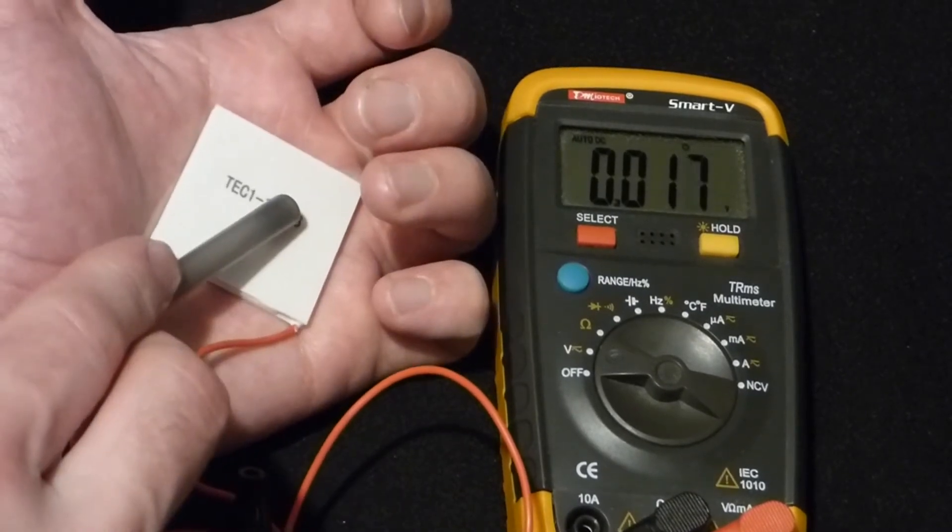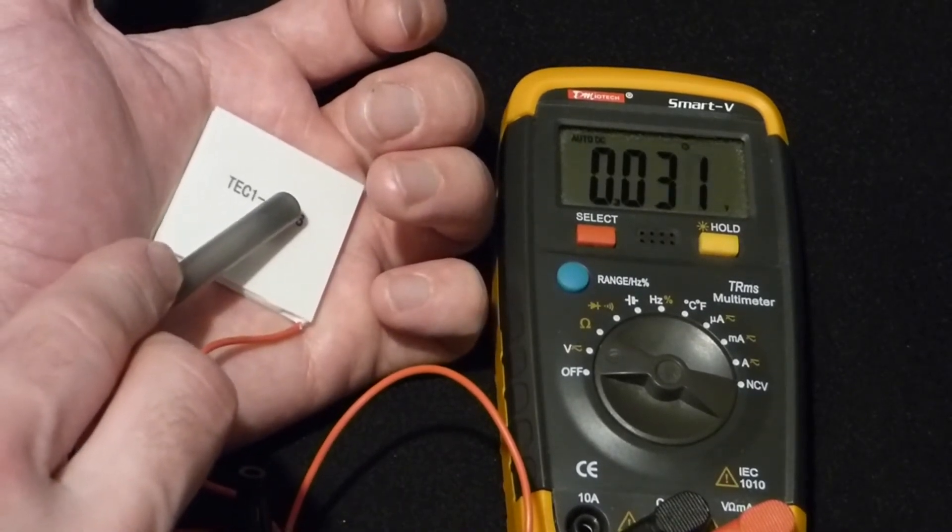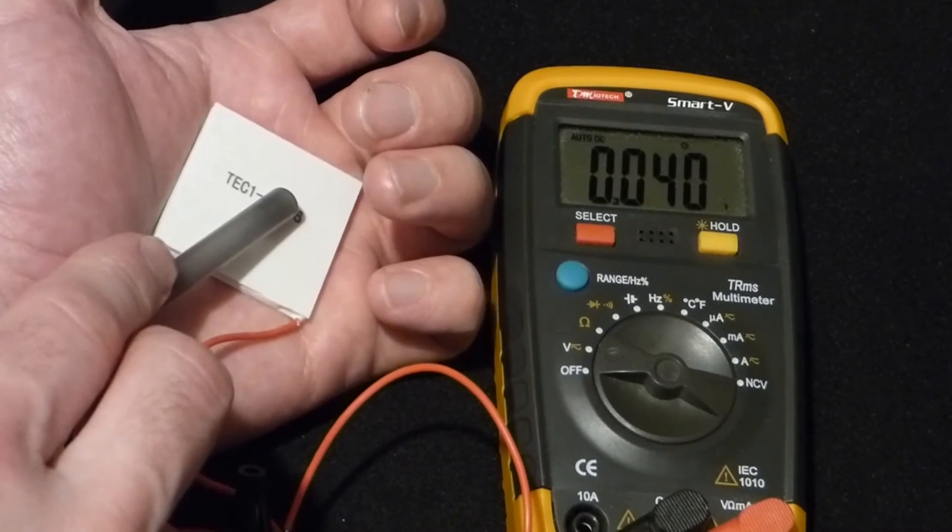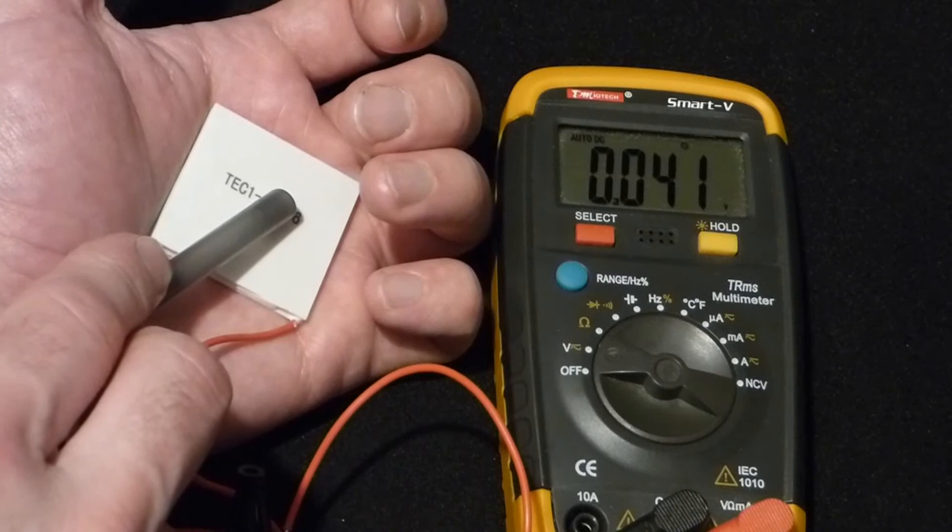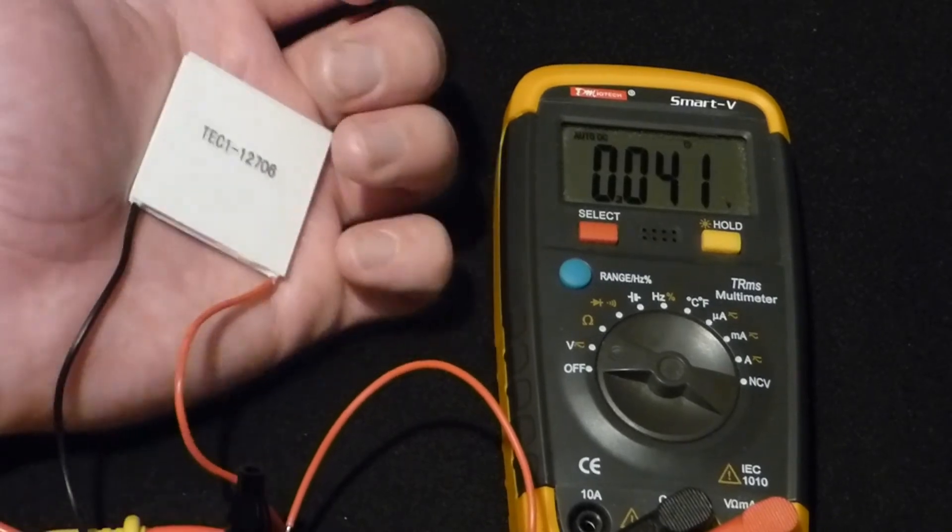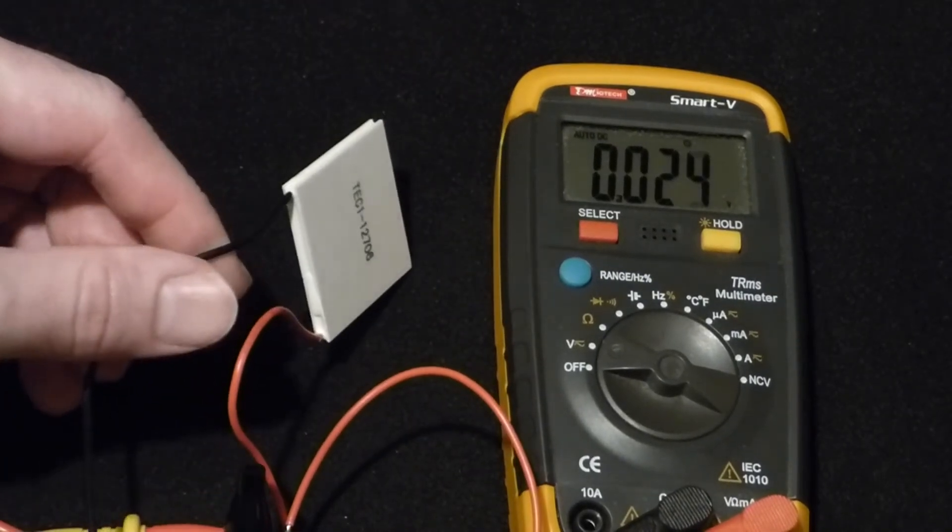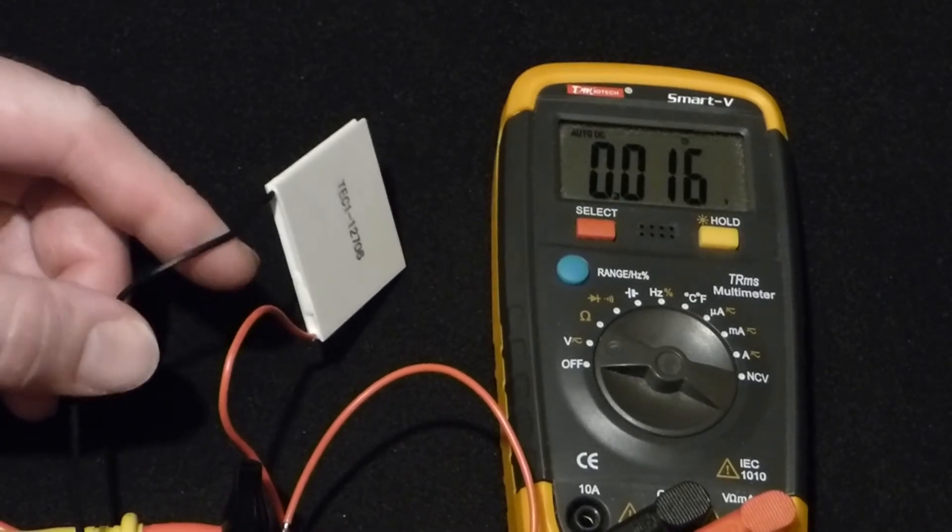Now if I push it into my hand, of course the other side will heat up more than if it's just kind of set there. And you can see we got to about 0.04 volts. So it went up quite a bit when I pressed on there, but still we're not getting a lot of voltage.